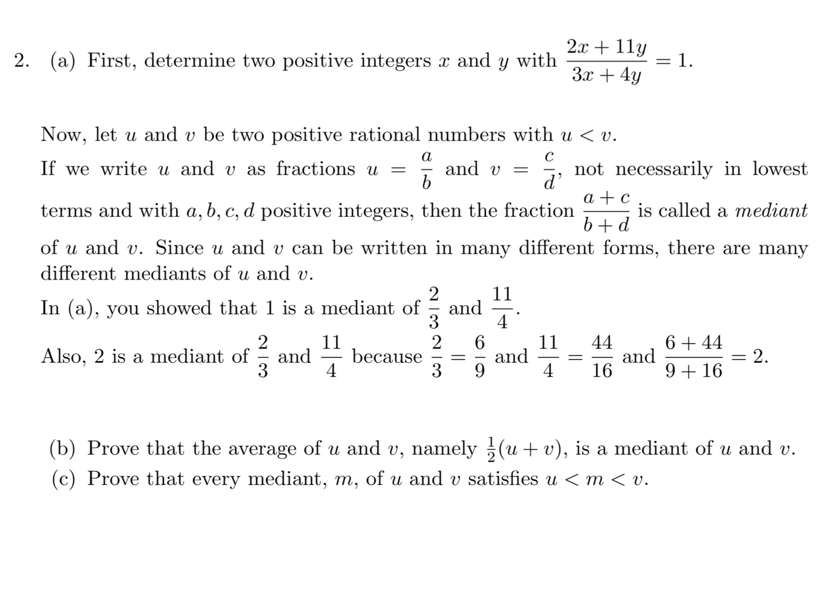First, determine two positive integers x and y with (2x + 11y) / (3x + 4y) = 1. Now let U and V be two positive rational numbers with U less than V. If we write U as A over B and V as C over D, not necessarily in lowest terms, with A, B, C, and D positive integers, then the fraction (A + C) / (B + D) is called a median of U and V. In part A, you showed that 1 is a median of 2/3 and 11/4. Also, 2 is a median of 2/3 and 11/4 because 2/3 is 6/9, and 11/4 is 44/16, and (6 + 44) / (9 + 16) = 2.